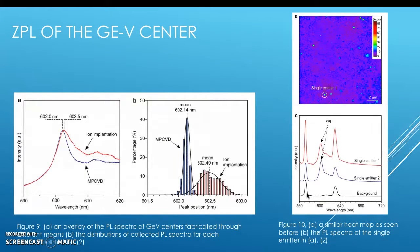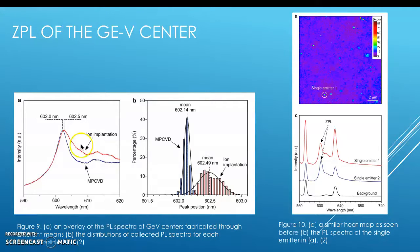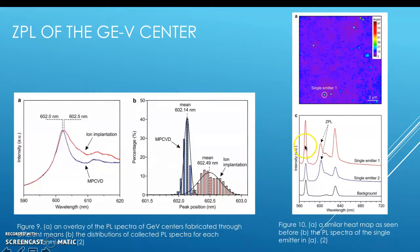The ZPL of the GeV center, quoted at about 602 nanometers, is confirmed in the Iwasaki paper, where MPCVD shows a peak at about 602 nm, whereas ion implantation gives about 602.5 nm and is slightly broader due to lattice stress causing broadening. A heat map of the photon count from ion implantation shows a selected single emitter. The single emitter's ZPL and a Raman peak in the 500s are visible, requiring a bandpass filter at about 600 nm to isolate the ZPL during experimentation.